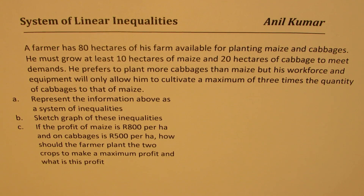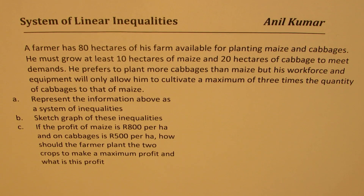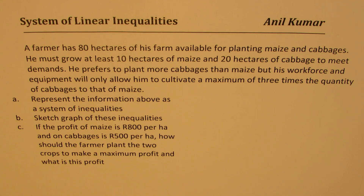The question is: a farmer has 80 hectares of his farm available for planting maize and cabbages. He must grow at least 10 hectares of maize and 20 hectares of cabbage to meet demands. He prefers to plant more cabbages than maize, but his workforce and equipment will only allow him to cultivate a maximum of three times the quantity of cabbages to that of maize. There are three parts: (a) represent the information as a system of inequalities, (b) sketch the graph, (c) if the profit of maize is R800 per hectare and cabbages R500 per hectare, how should the farmer plant to make maximum profit?